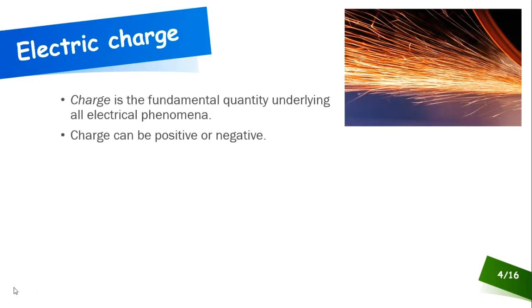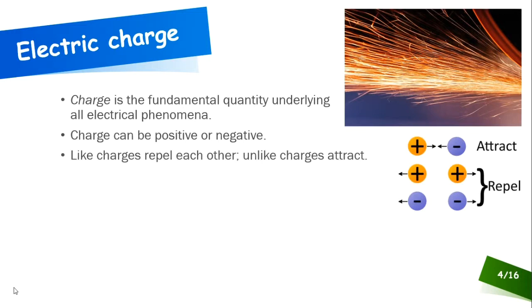Electric charge can be positive or it can be negative. Like charges repel each other, while unlike charges attract each other — opposites attract. Positive and negative are drawn to each other because they balance each other out. Nature likes balance. Two positive or two negative charges, on the other hand, repel each other.